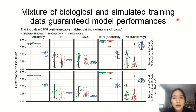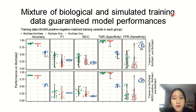We used not only biological data but also simulation data to train our models, because deep learning models in general require a large training set to achieve the desired performance. Due to the limited number of experimentally validated variants, we added additional simulation data to enlarge our training sets. To ensure this mixture of data is good for training, we conducted an experiment by training the model with only simulated data, with only biological data, and with a one-to-one mixture, and compared their respective performances.